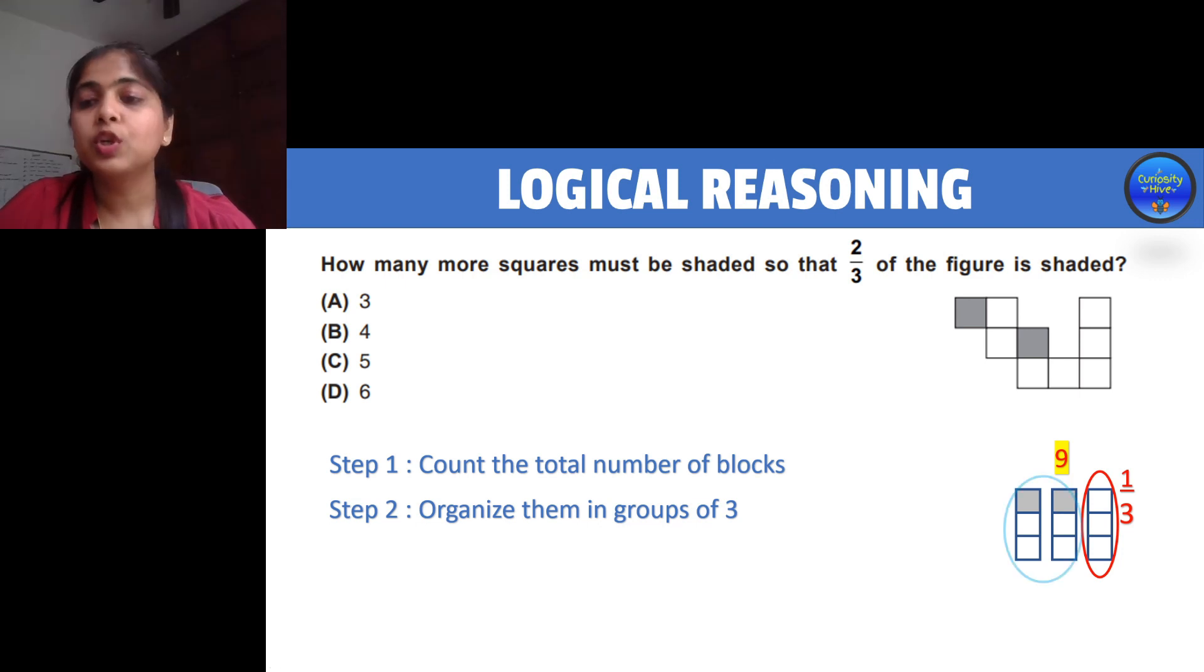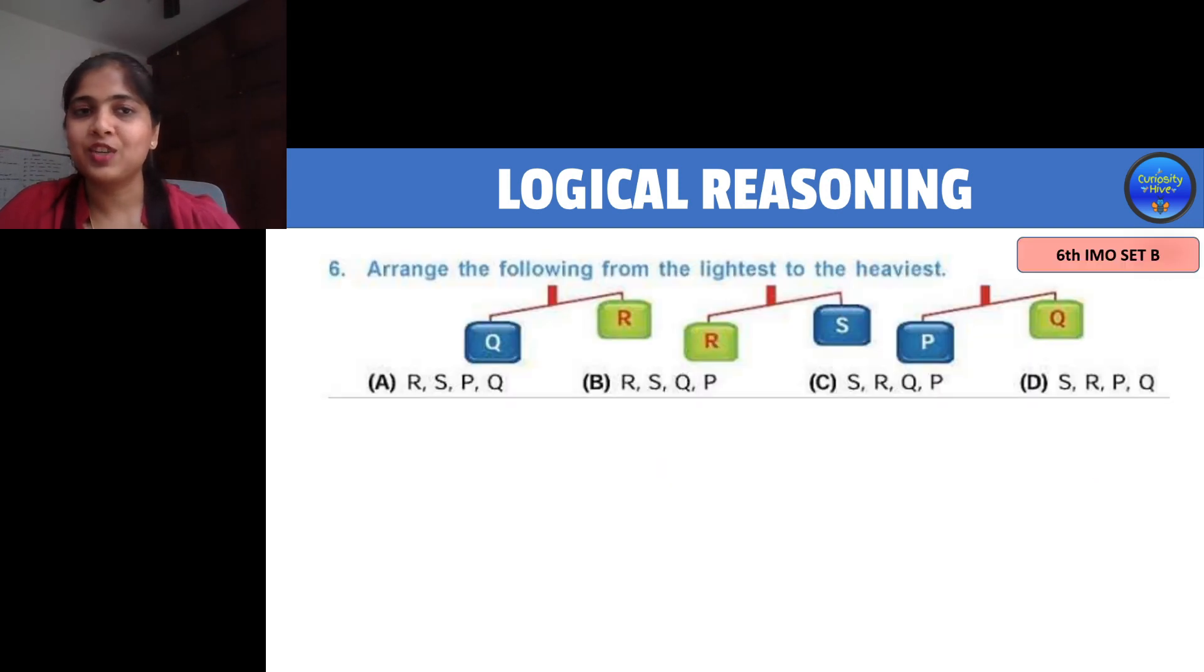You can see that one column is one-third because it is one out of three equal portions. So two columns will be two-thirds of this entire image. Already two blocks are shaded. So the remaining blocks that need to be shaded are one, two, three, four to make two-thirds of the figure completely shaded. Your right answer is option B.